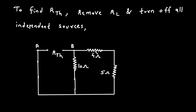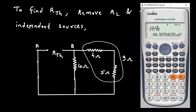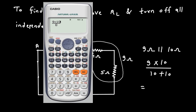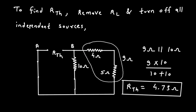Now here we can see this 4 Ohm and 5 Ohm are connected in series, so their equivalent resistance will be 4 plus 5 = 9 Ohm. Now this 9 Ohm and this 10 Ohm are connected in parallel: 9 parallel with 10 = (9 × 10) / (9 + 10) = 4.73 Ohm. So the value of RTH is 4.73 Ohm, which is the resistance between terminal A and terminal B.